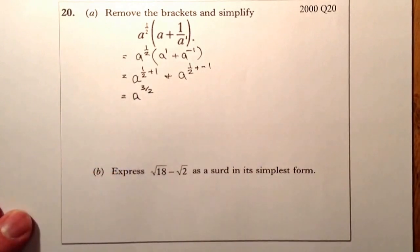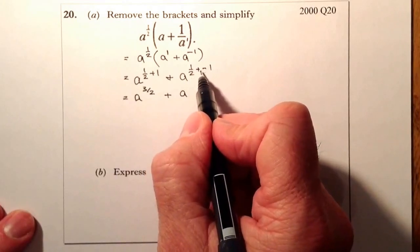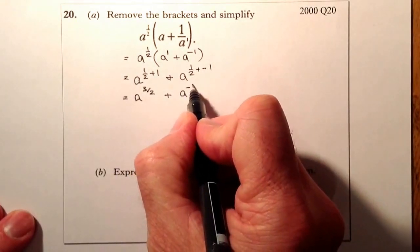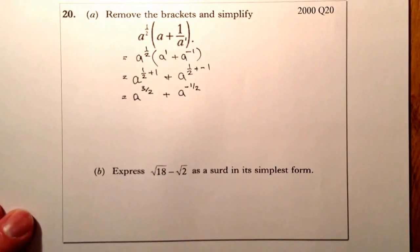So a to the power of 3 over 2 plus, and that's going to be a to the power of 1 half minus 1 will give me minus 1 half. And that would be the question complete there.